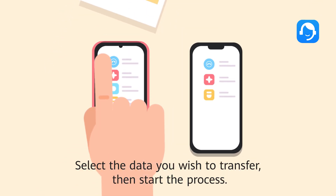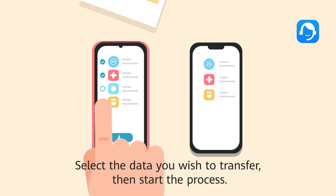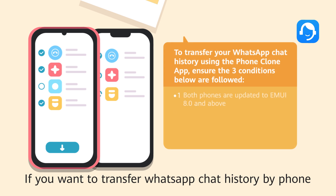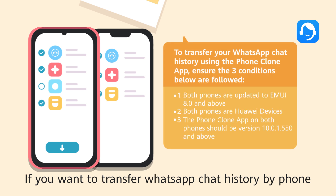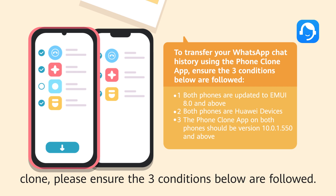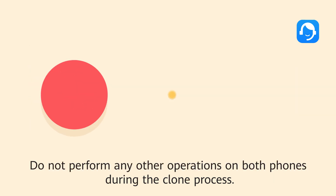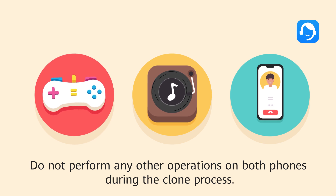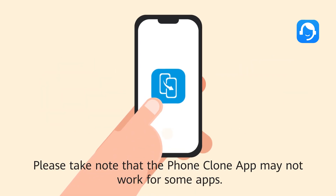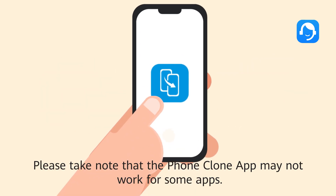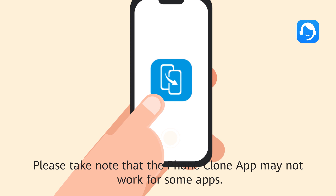Select the data you wish to transfer, then start the process. If you want to transfer WhatsApp chat history via PhoneClone, please ensure the three conditions below are followed. Do not perform any other operations on both phones during the clone process. Please take note that the PhoneClone app may not work for some apps.